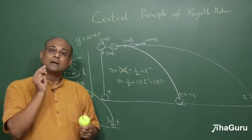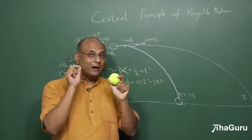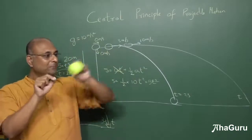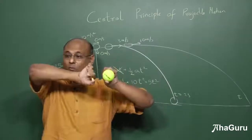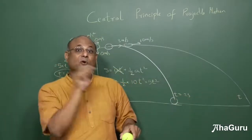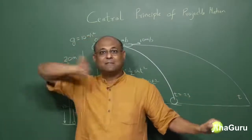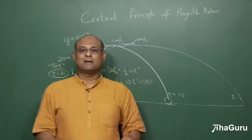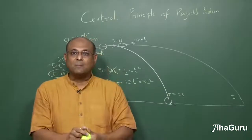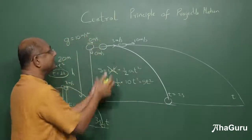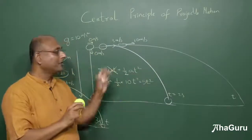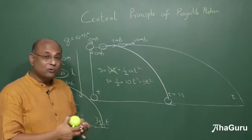Suppose one ball is thrown at 3 metres per second and another at 5 metres per second. If the 3 m/s ball takes 4 seconds to hit the ground, the 5 m/s ball also takes 4 seconds — everybody takes the same time. Even dropping the ball gives the same time. However, this only applies to horizontal throws; a ball thrown at an angle upward or at an angle downward is a different case.